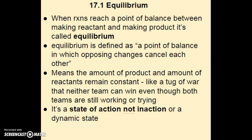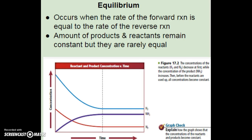Equilibrium is defined as a point of balance in which opposing changes cancel each other. This means the amount of products and reactants remain constant. It's like a tug of war that neither team can win, even though both teams are still working. It's a state of action, not inaction, because the forward and reverse reactions haven't stopped — they're just equal to each other.